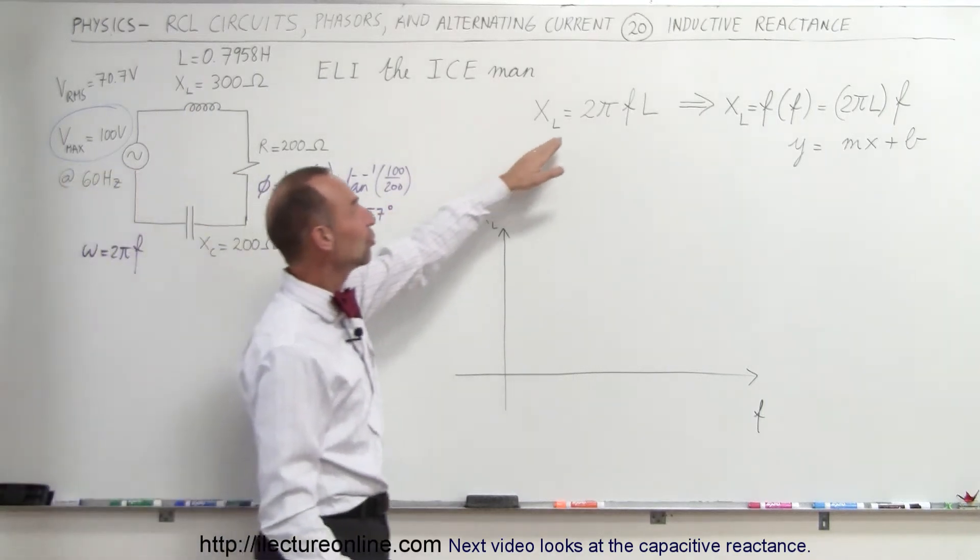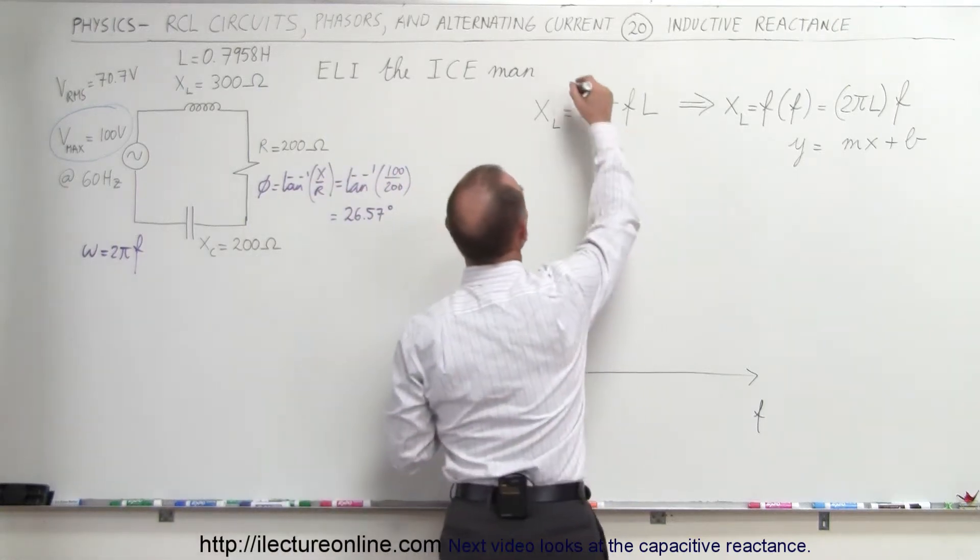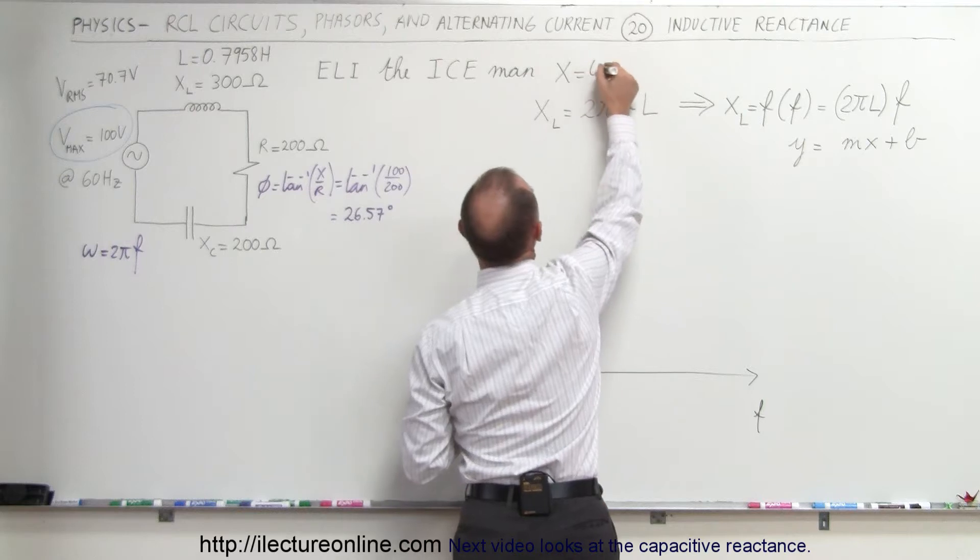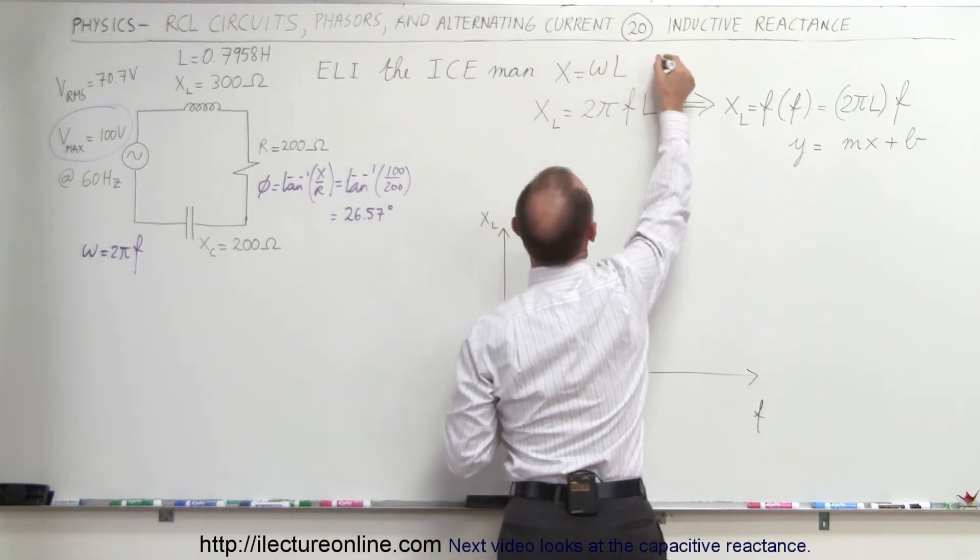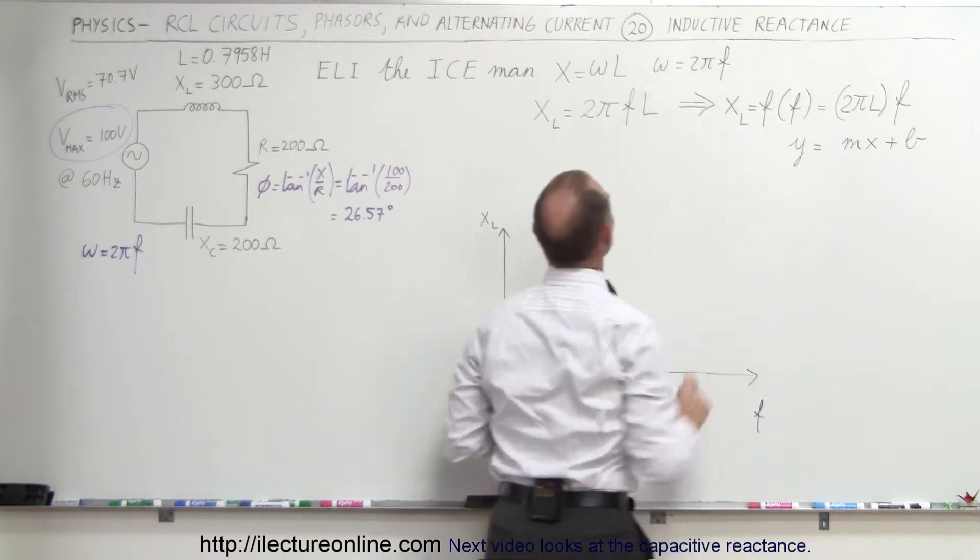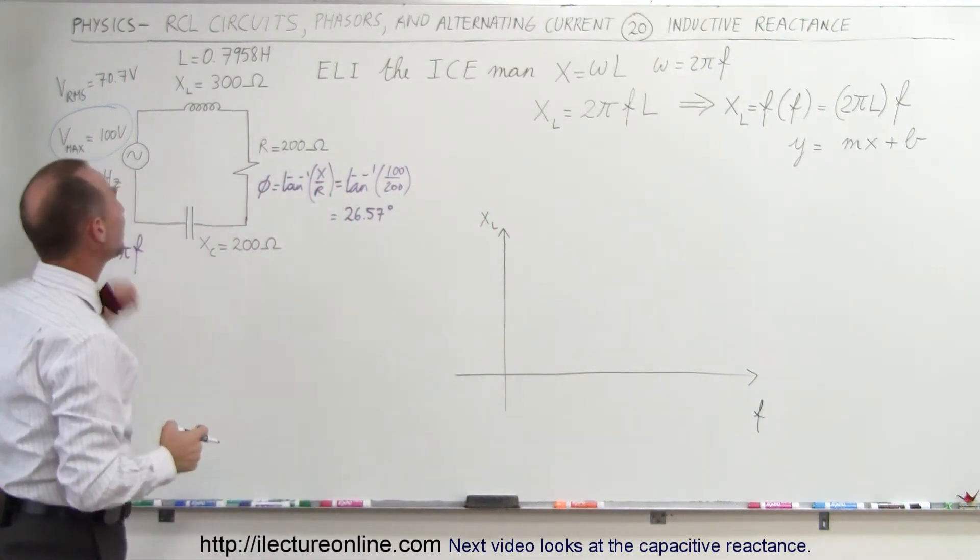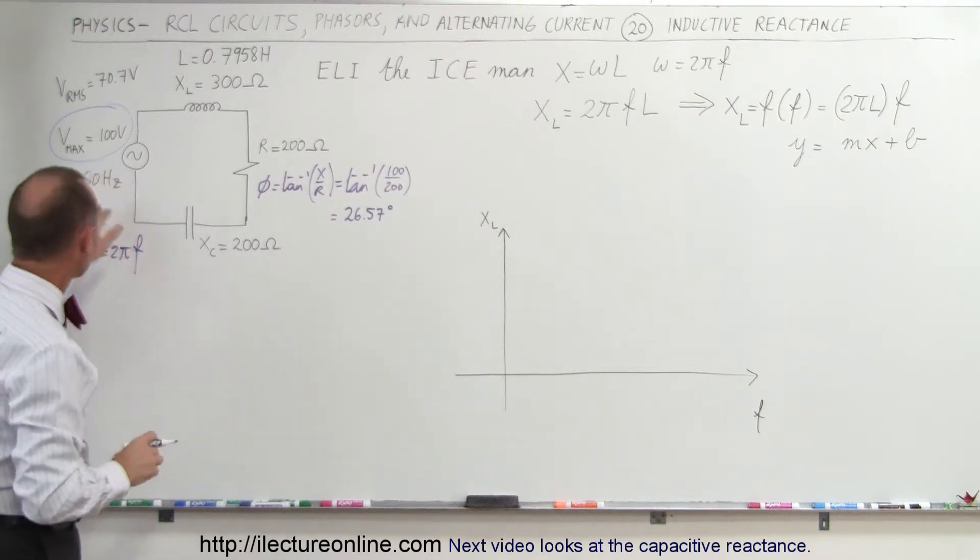And the way we find that, XL is 2π times the frequency times L. Sometimes we also write the equation X is equal to ω times L, where ω is equal to 2πF. So that's the radial frequency. F is the oscillating frequency of the voltage supply, in this case 60 hertz.